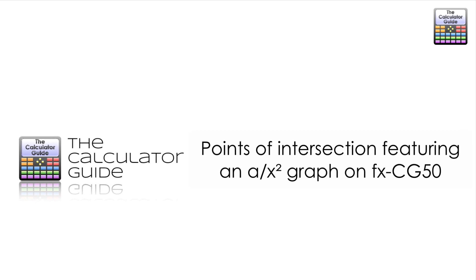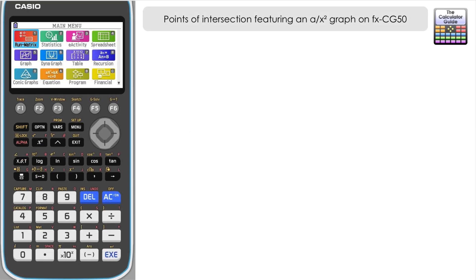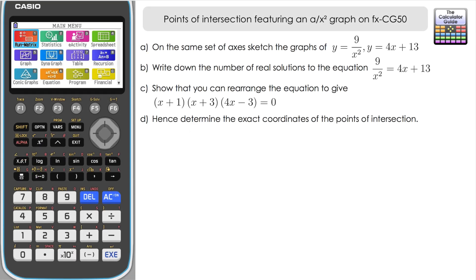Hello and welcome to the Calculator Guide video on points of intersection featuring an a-over-x-squared graph on the Casio fx-CG50. We're going to use the CG50 to find information and help support answering this question, although parts c and d say 'show' and 'hence', so we will be doing some non-calculator methods as well, but we can use the CG50 to support those answers.